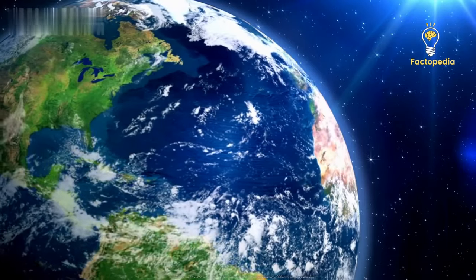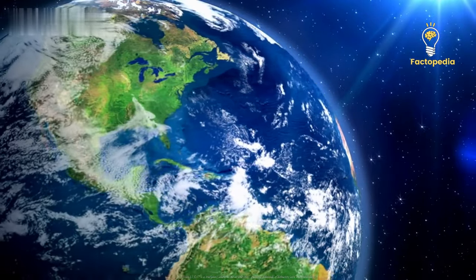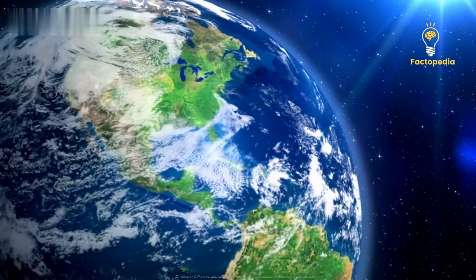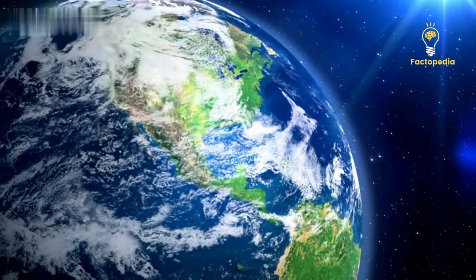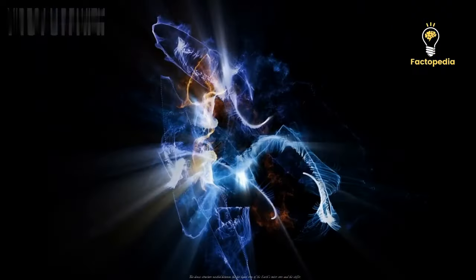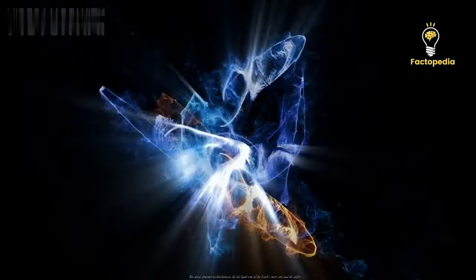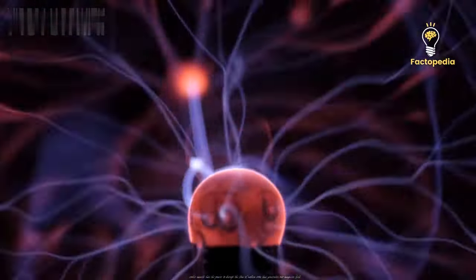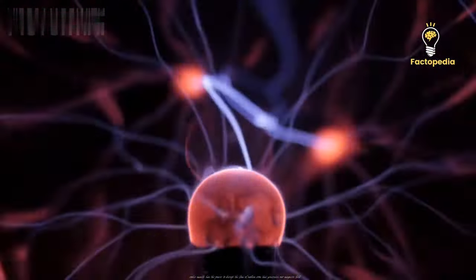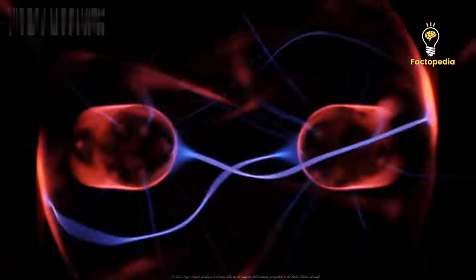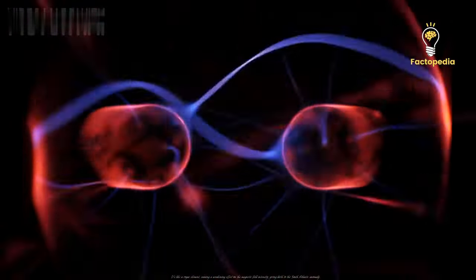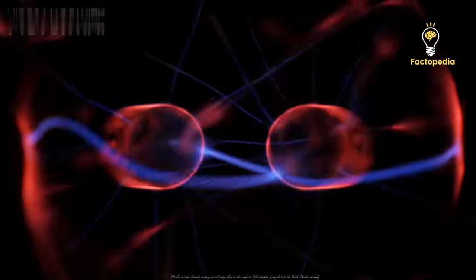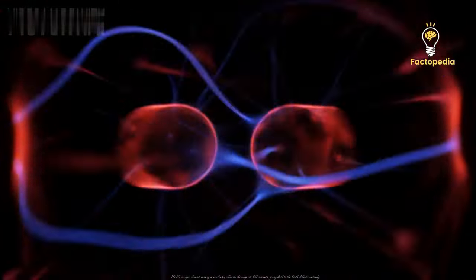The African LLSVP is a true giant, almost as old as time itself, spanning thousands of kilometers with sharp boundaries. This dense structure nestled between the hot liquid iron of the Earth's outer core and the stiffer, cooler mantle has the power to disrupt the flow of molten iron that generates our magnetic field. It's like a rogue element, causing a weakening effect on the magnetic field intensity, giving birth to the South Atlantic anomaly.